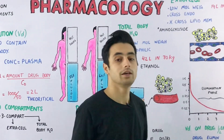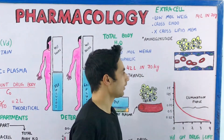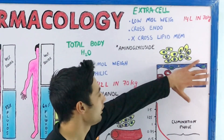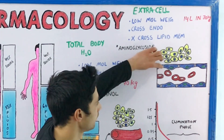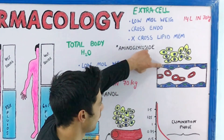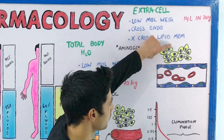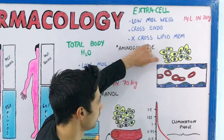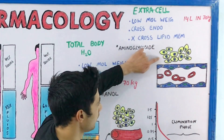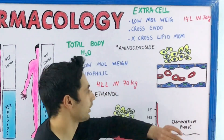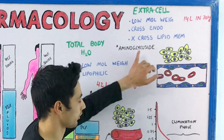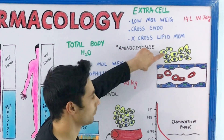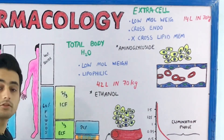Now let's talk about drugs distributed in the extracellular space as well as in plasma. The drug flows through your plasma and, because it has low molecular weight, it can cross the endothelial cells through junctions to reach the interstitium. However, these drugs are not lipophilic, so they cannot enter the cells. They are distributed only in plasma and interstitium — about 14 liters in a 70 kg man. The example is aminoglycosides.